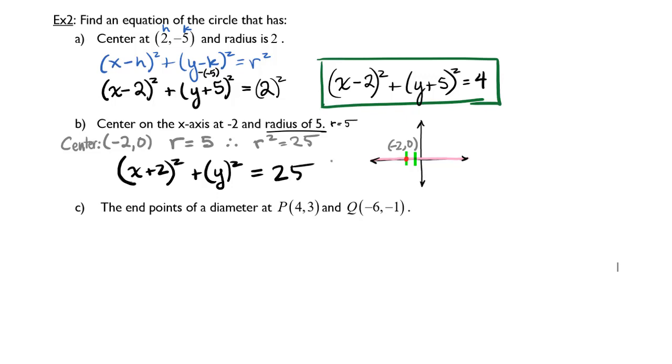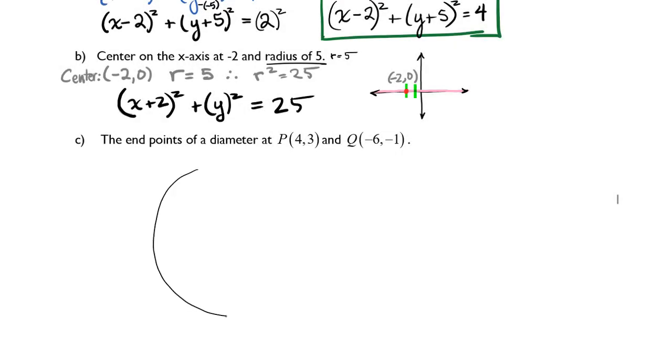Now let's look at the end points of a diameter at P equals (4, 3) and Q equals (-6, -1). We have two points P and Q. Here's our circle, and we know that one of the points on the circle is (4, 3), and that's called point P.